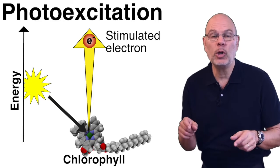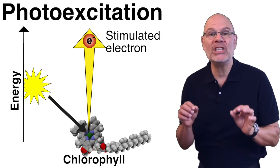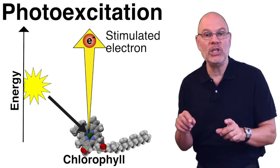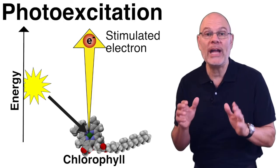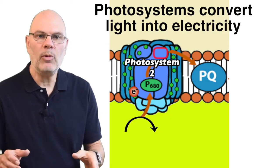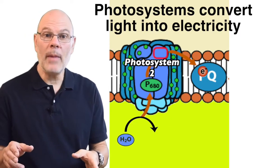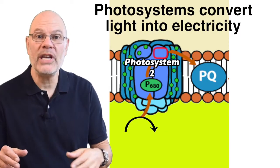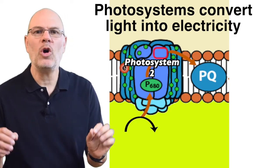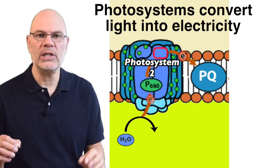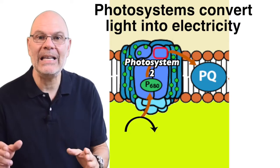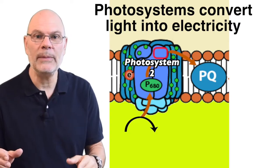When light shines upon chlorophyll, the light stimulates the electrons in the magnesium atom to jump to a higher energy level. In the thylakoid membrane, chlorophyll molecules — represented by these green spheres — are organized into what are called photosystems that do what solar cells do: they convert light into electricity.